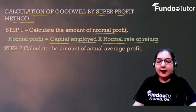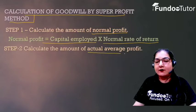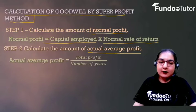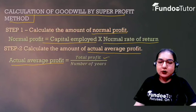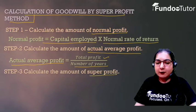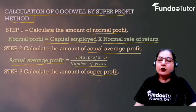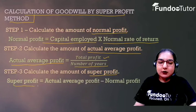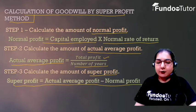Then, you calculate the Actual Average Profit. Actual Average Profit is equal to Total Profit divided by the Number of Years. Next, you calculate Super Profit. Super Profit is equal to Actual Average Profit minus Normal Profit.